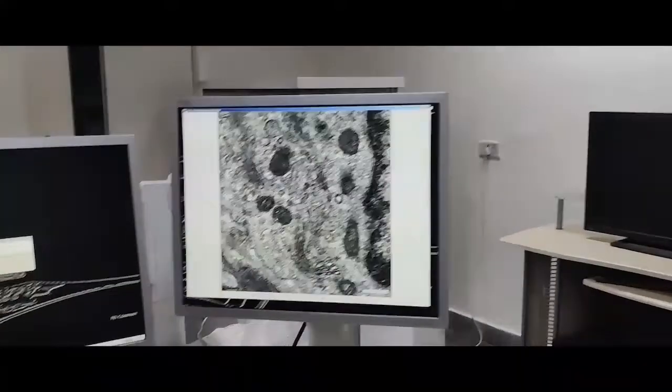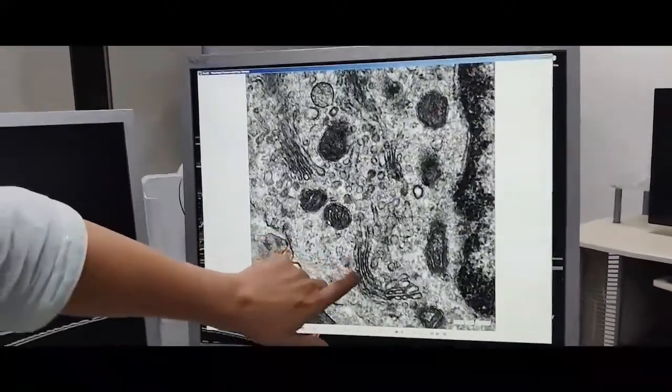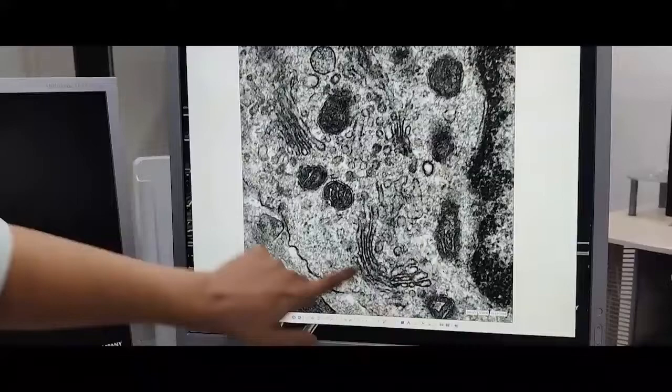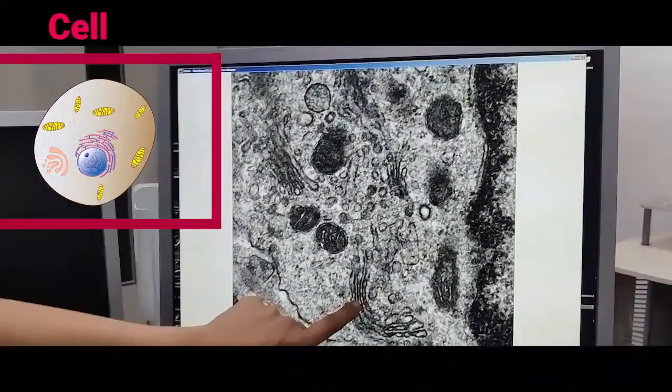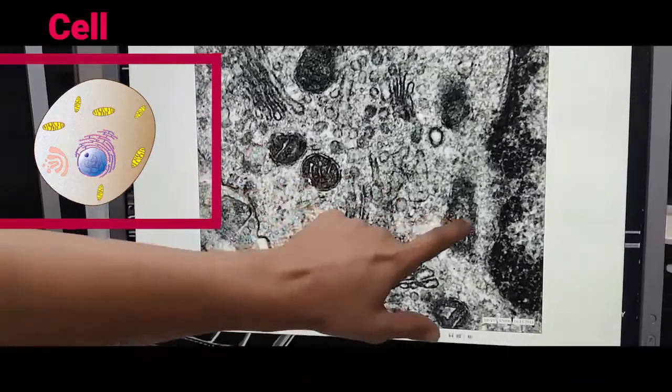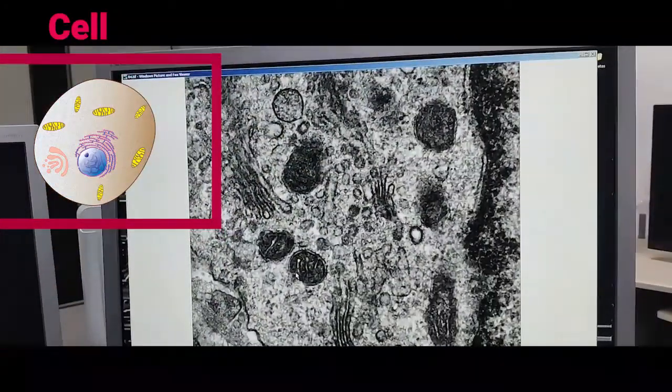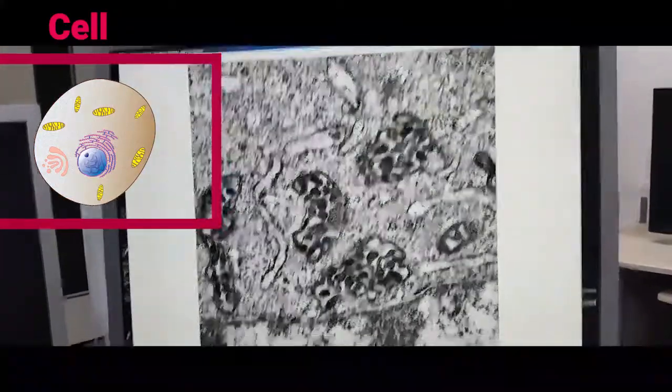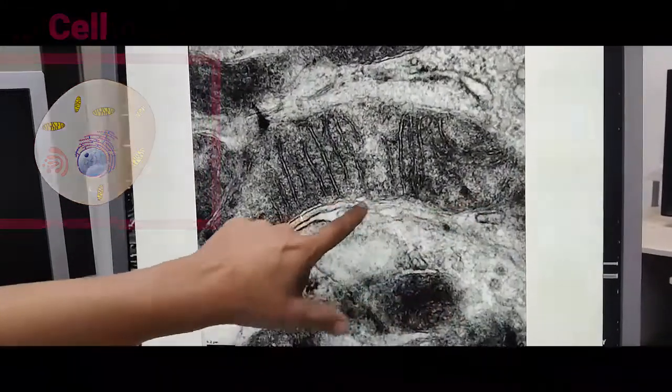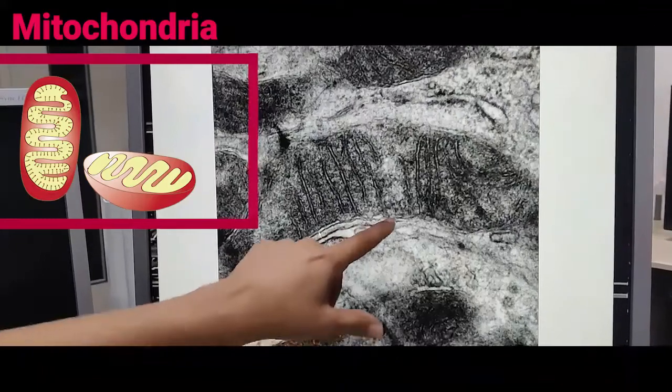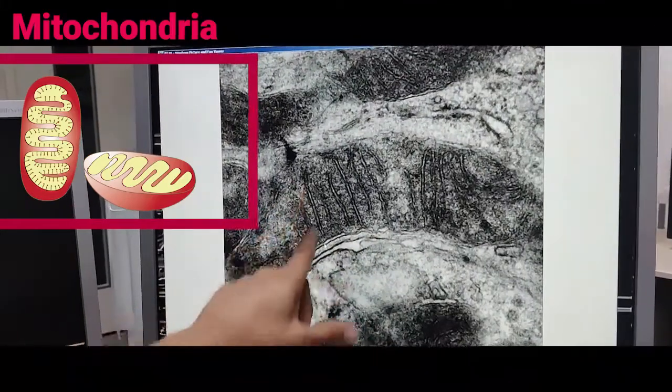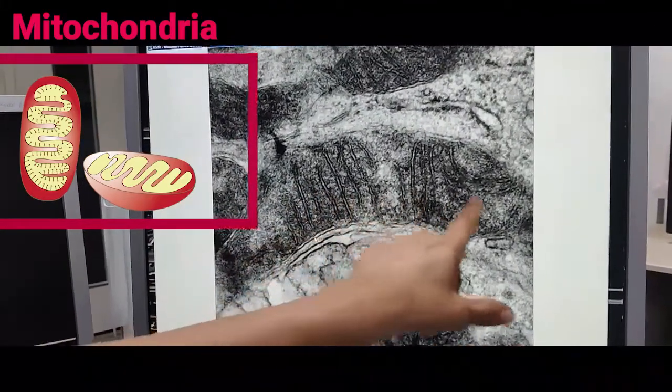You see this image, what you see here is a typical Golgi apparatus. You can see the cisternae stacked and these small things are the mitochondria. Let me just show you some more pictures. This one. So, this is a typical mitochondria that you can see. You have the outer membrane, you have the inner membrane and now these are the cristae of the mitochondria.